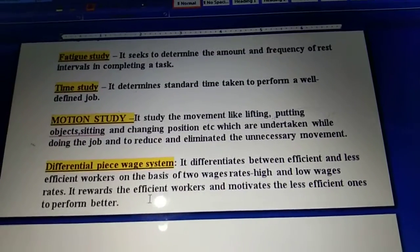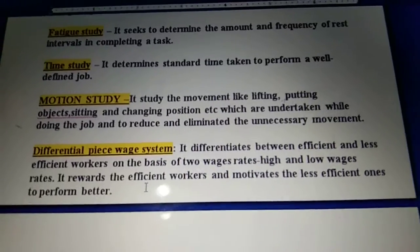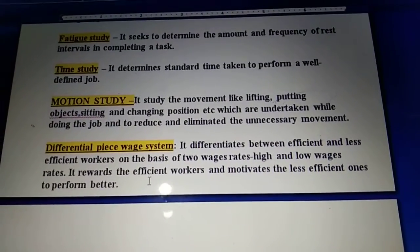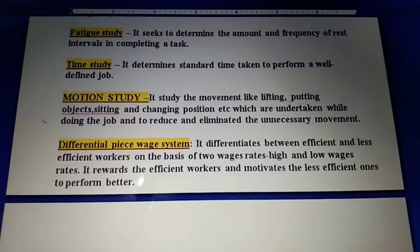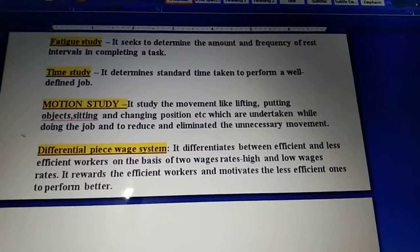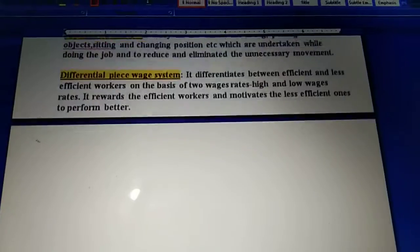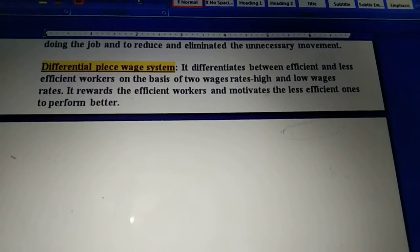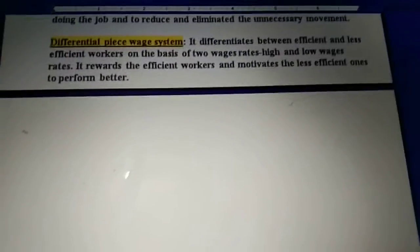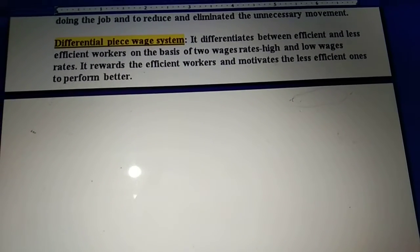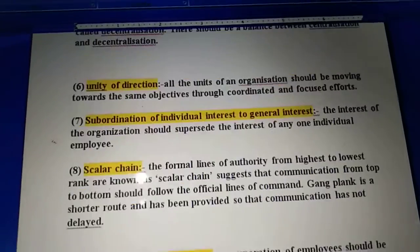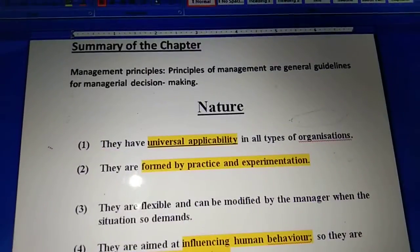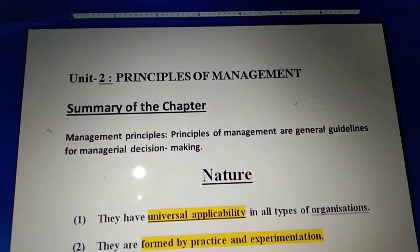The next technique is the differential piece wage system. This technique differentiates between efficient and less efficient workers. Taylor said we should differentiate between workers who are efficient and those who are not, and wages should be higher for efficient workers and lower for those not performing their work well. These are all the techniques given by Taylor. With this, we have finished revising chapter number 2 - Principles of Management.